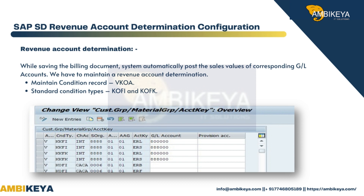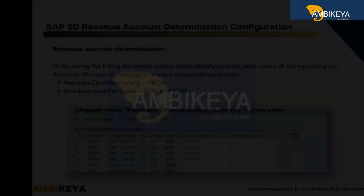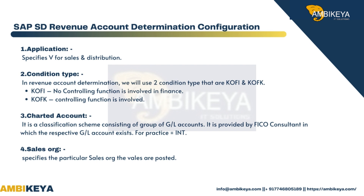We have to maintain revenue account determination — maintain condition record VKOA. Standard condition types are KOFI and KOFK. Application specifies V for Sales and Distribution. In revenue account determination we use two condition types: KOFI, where no controlling function is involved in finance, and KOFK, where controlling function is involved. Chart of accounts is a classification scheme consisting of a group of G/L accounts, provided by the FICO consultant, in which the respective G/L account exists.